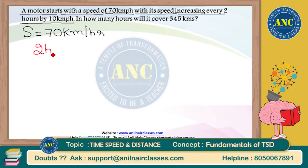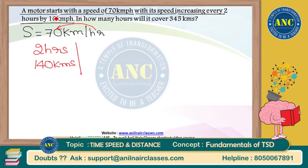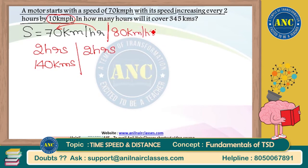In the first 2 hours, traveling at 70 km/h: 70 × 2 = 140 kilometers covered. After 2 hours, speed increases by 10 to become 80 kilometers per hour. For the next 2 hours at 80 km/h: 80 × 2 = 160 kilometers. So in the first 4 hours, 140 + 160 = 300 kilometers is already covered. Out of 345 total, 300 is done — remaining is 45 kilometers.